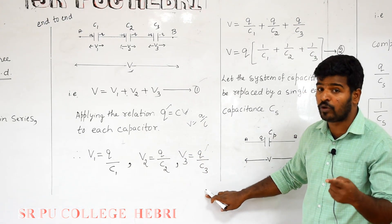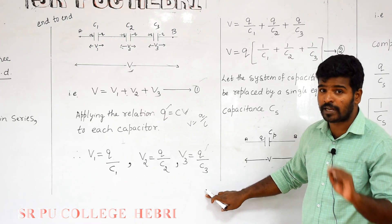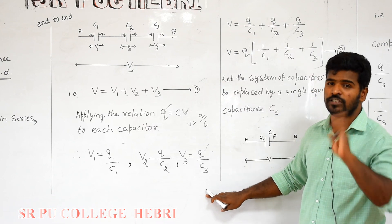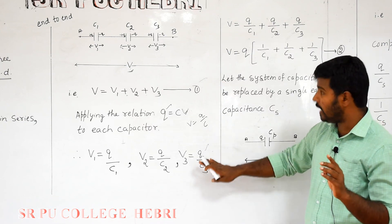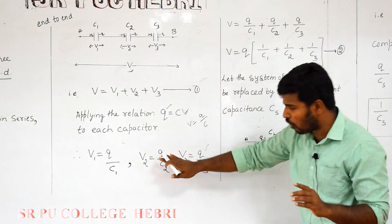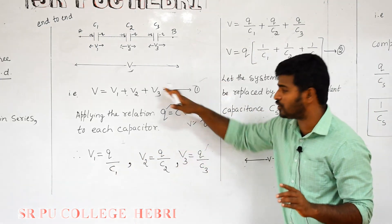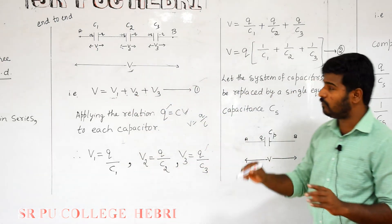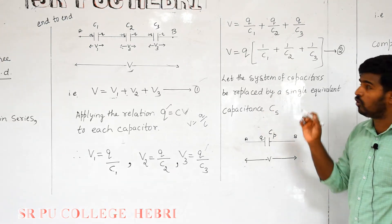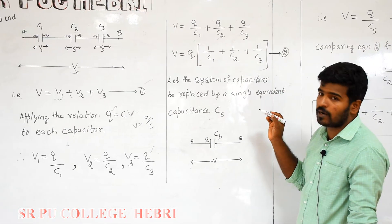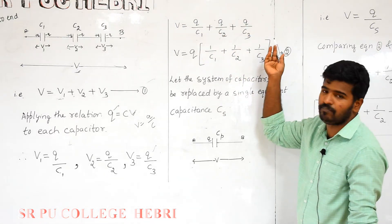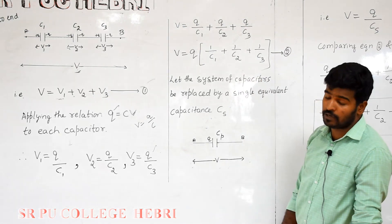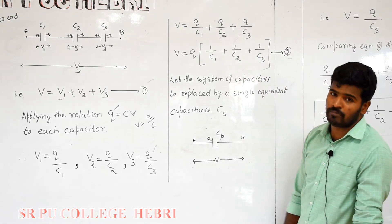The charge on each capacitor is Q — not Q1, Q2, Q3 — because the charge on each capacitor in series is the same. Substituting V1, V2, V3 into equation number 1: V = Q/C1 + Q/C2 + Q/C3. Taking Q as common, V = Q × (1/C1 + 1/C2 + 1/C3), which is equation number 2.